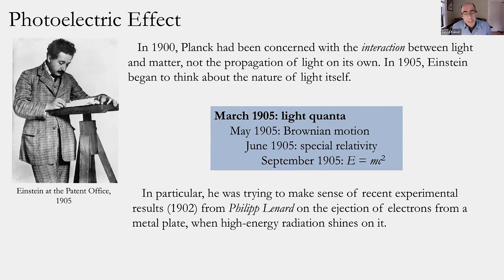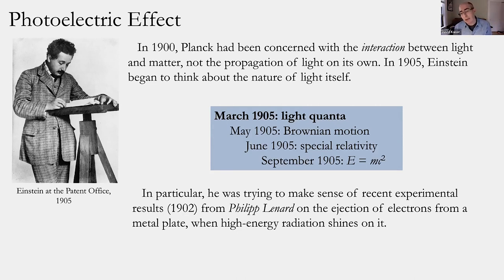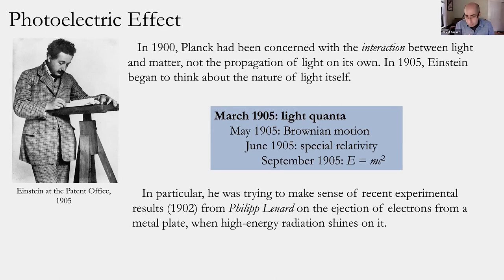This was actually the first of Einstein's four amazing papers submitted to the Annalen der Physik in 1905. Sent to the journal in March of that year, it dealt with what he called light quanta. Einstein was thinking not only about Planck's work — he had other recent experimental results in mind as well. One of the ones he was most focused on was a series of puzzling experimental results published through 1902 by German researcher Philipp Lenard.